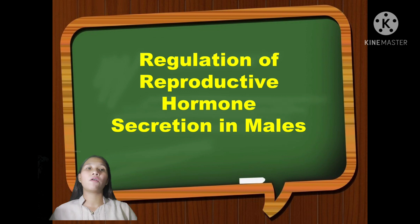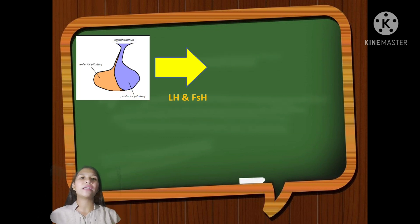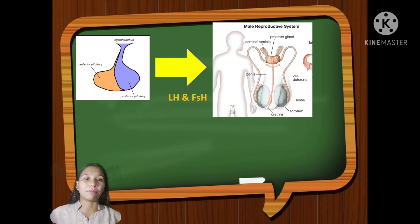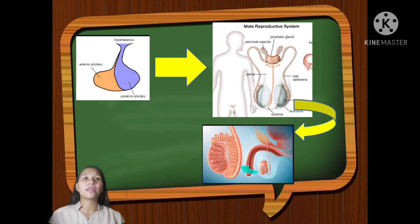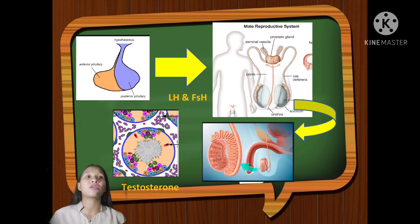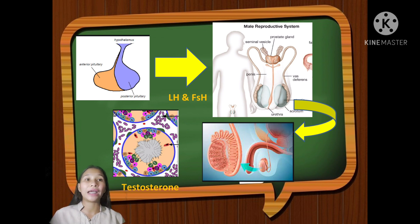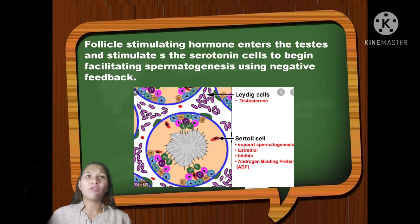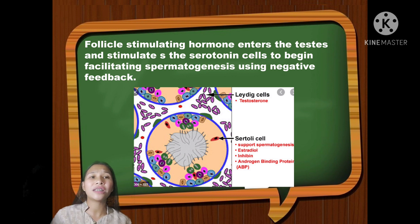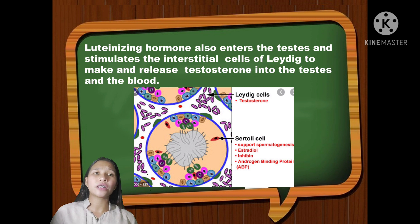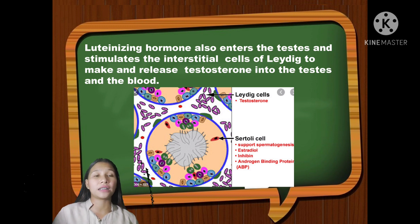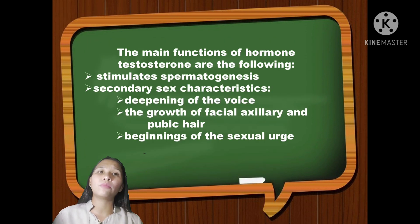For the regulation of reproductive hormone secretion in males, once the pituitary gland releases LH and FSH, they travel through the bloodstream to the testes. The luteinizing hormone stimulates testosterone production, while the follicle-stimulating hormone enters the testes and stimulates the Sertoli cells to begin facilitating spermatogenesis. Luteinizing hormone also stimulates the interstitial cells of Leydig to make and release testosterone into the testes and the blood.